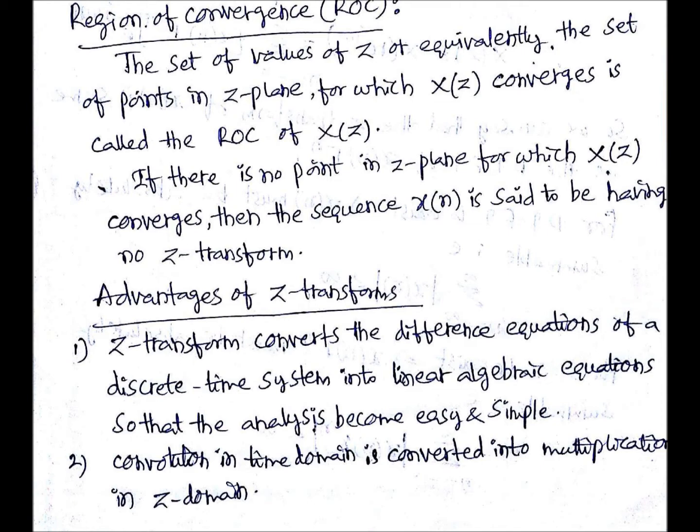If there is no point in Z-plane for which X of Z converges, then the sequence X of N is said to be having no Z-transform. That means ROC is the set of points for which Z-transform is going to exist.